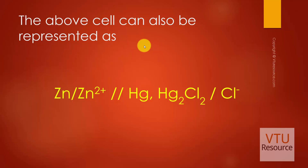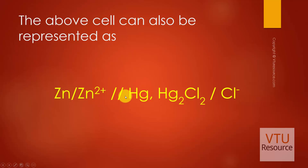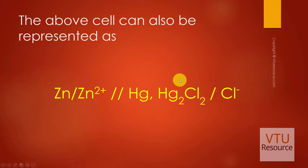This cell can also be represented in notation as: Zn | Zn²⁺ — this is the salt bridge — Hg | Hg₂Cl₂ | Cl⁻, which is the representation of the Calomel electrode.